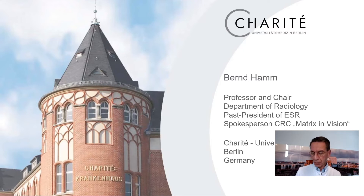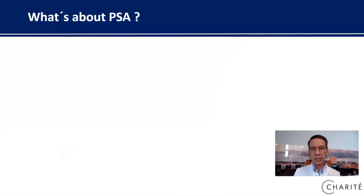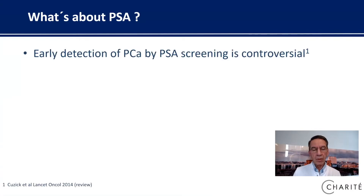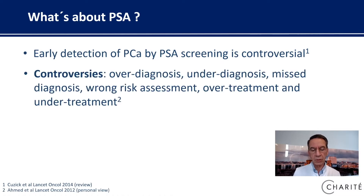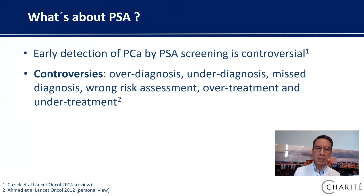So how is prostate cancer diagnosed? It is first a simple blood test to get a check of the PSA. However, early detection of prostate cancer by PSA screening is controversial, and these are the controversies: overdiagnosis, underdiagnosis, misdiagnosis, wrong risk assessment, overtreatment, and undertreatment. We can say this is a real yin and yang story.